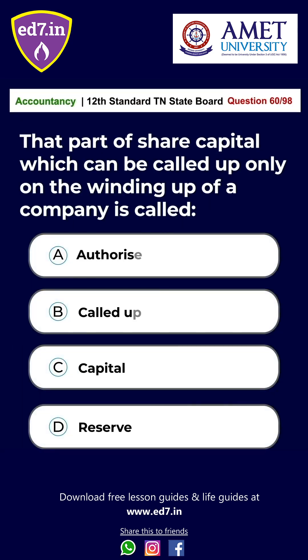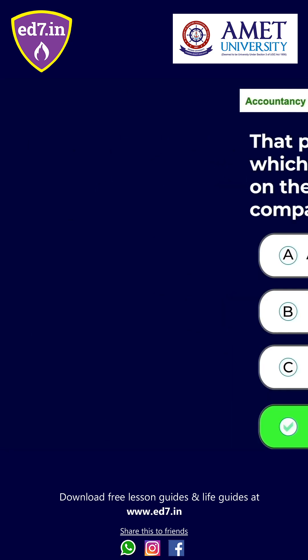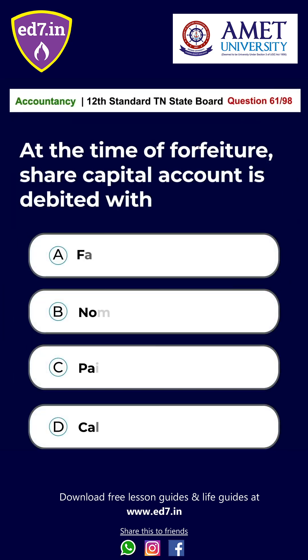Question No. 60: The part of share capital which can be called up only on winding up the company is called: A. Authorized Capital, B. Called Up Capital, C. Capital Reserve, D. Reserve Capital. The answer is Option D: Reserve Capital.